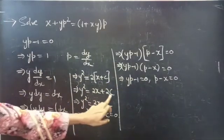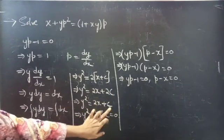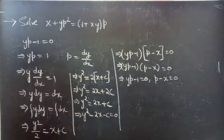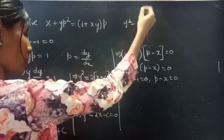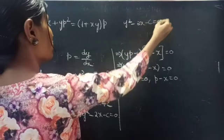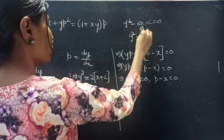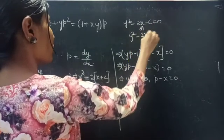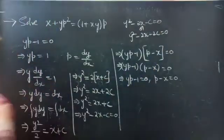We can write the constant 2c simply as c, giving y squared equals to 2x plus c. Taking all terms to the LHS: y squared minus 2x minus 2c equals to 0.